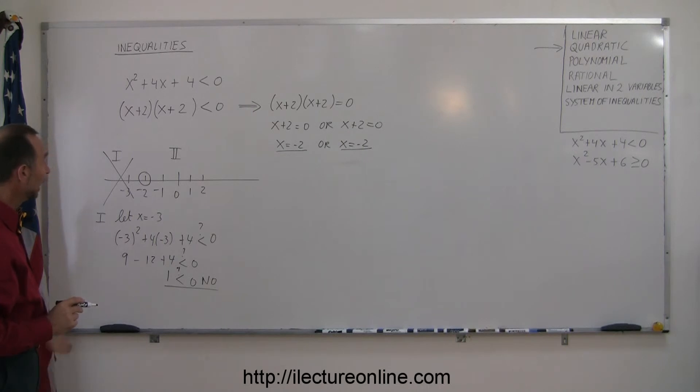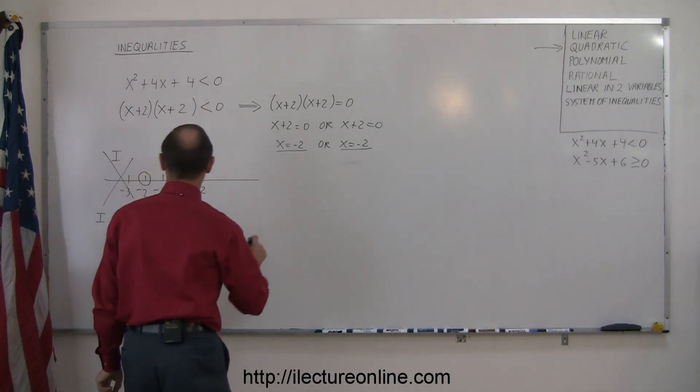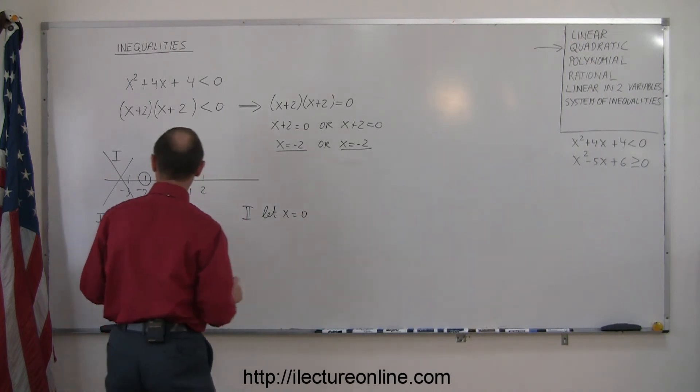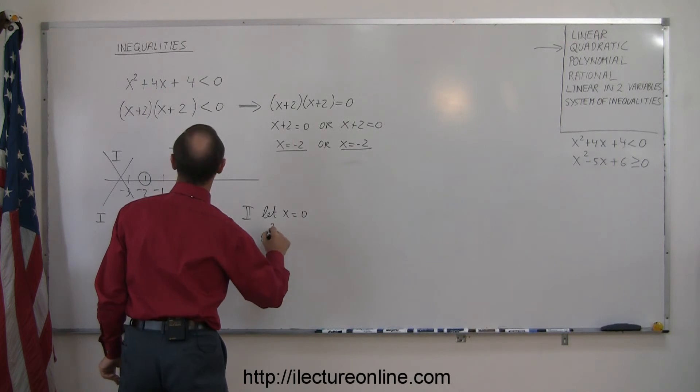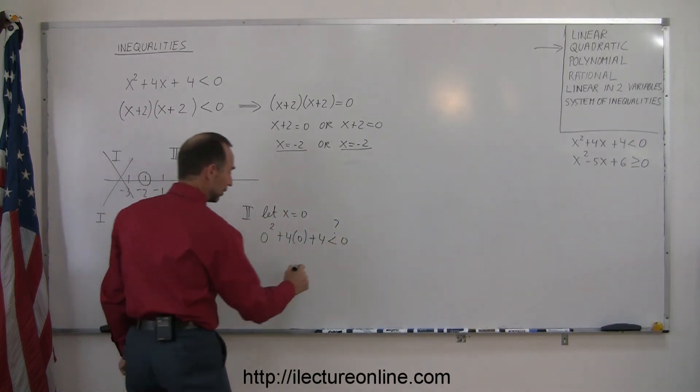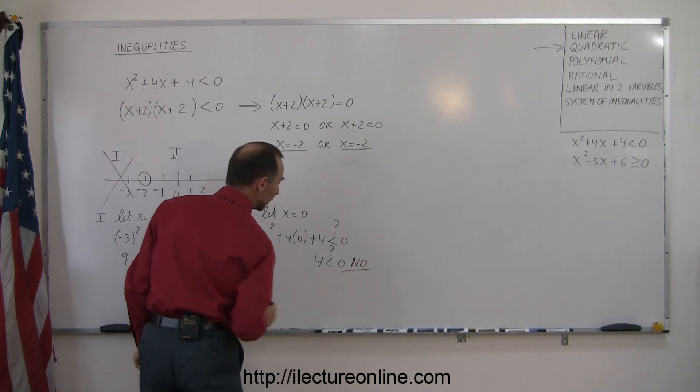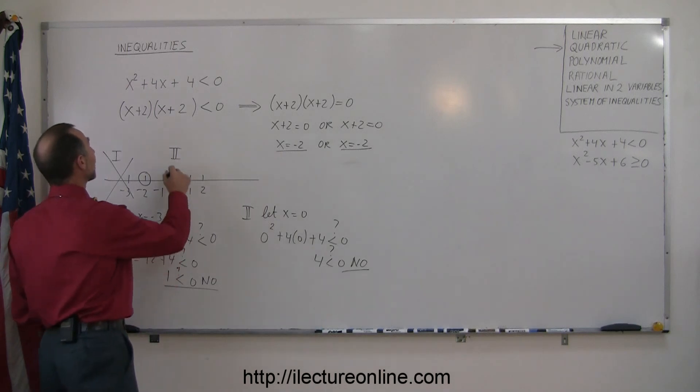So now we go ahead and pick a point in the other region, region number 2, let's pick the point 0. 0 is always an easy point to pick. So for region number 2, we let x equal 0. We plug that into the inequality, so we have 0 squared plus 4 times 0, plus 4, is that less than 0? And of course, 0 plus 0 is 0. So is 4 less than 0? And the answer is no again. That means the region to the right of negative 2 is not part of the solution.